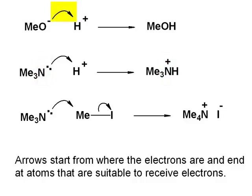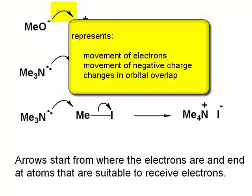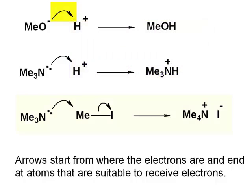Three features represented by a mechanistic arrow. Movement of electrons. Movement of negative charge. So when negative charge has moved away from an atom, it's leaving a positive charge behind. In this case, this carbon atom can't receive electrons unless something else happens.